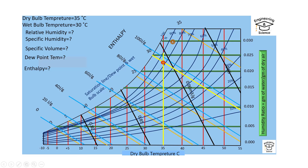Now we are ready to find relative humidity. As mentioned, this curve represents relative humidity. The intersection point is located between the 80 percent and 90 percent curves, so it is about 83 percent. That is the answer for relative humidity.